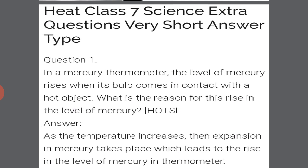Very short answer type questions of chapter 4, class 7. Question number 1: In a mercury thermometer, the level of mercury rises when its bulb comes in contact with a hot object. What is the reason for this rise in the level of mercury? As temperature increases, expansion in the mercury takes place, which causes the rise in the level of mercury in the thermometer. Whenever there is a rise in temperature, the mercury will rise.